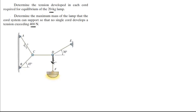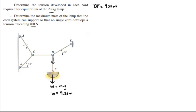First, you have tension going down and the weight, which is given by mass times the acceleration of gravity — 9.81 meters per second squared since we're in the metric system. So the weight is 9.81 times the mass. The tension developed in DF is the same as the weight, so DF equals 9.81 times the mass. At point D, assuming X is going to the right and Y is going up, you have forces DE and CD.